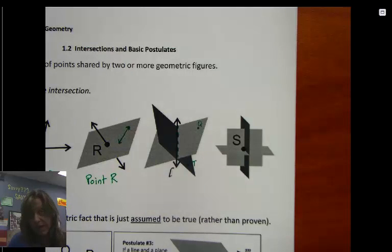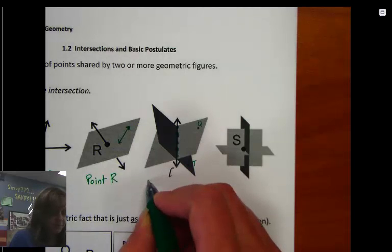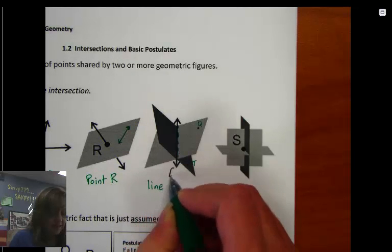So rather than name it point by point by point, we name the whole line because that's shared by both. And this line is line L.